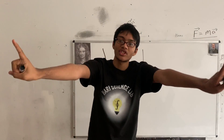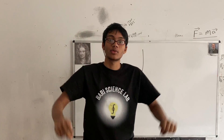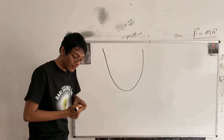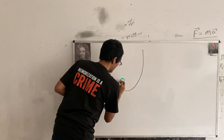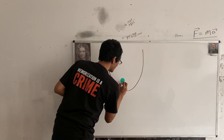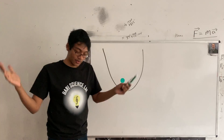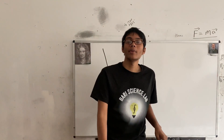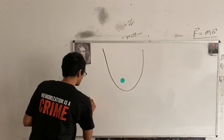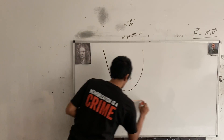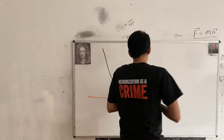Just like every circle has two things — a radius and a center — every parabola also has two things. Number one, every parabola has a focus — this green dot right here is the focus. Number two, every parabola has a line we call the directrix, shown here.